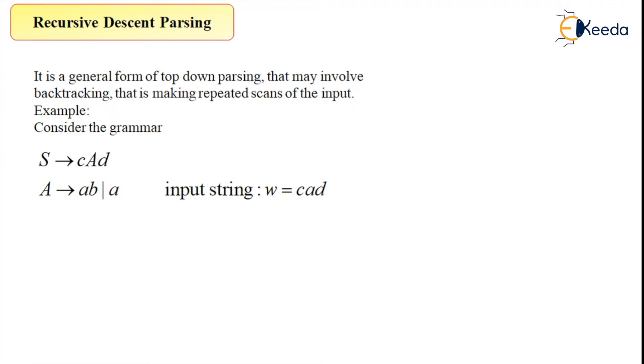The next topic we are discussing is the recursive descent parser. We have already seen the top-down parsing method and how this top-down parser works. The recursive descent parser will summarize that situation of top-down parsing. It is a general form of top-down parsing that may involve backtracking, that is making repeated scans of the input.